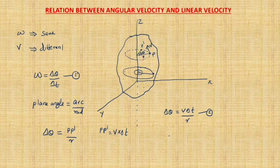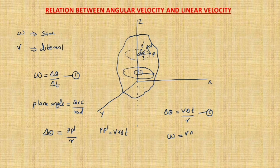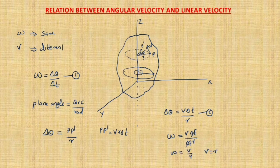Now compare equations 1 and 2. From equation 1, omega equals delta theta divided by delta t, and substituting delta theta gives V times delta t divided by r, all divided by delta t. The delta t terms cancel, so we get omega equals V divided by r, or V equals r times omega. This is the relation connecting linear velocity and angular velocity.